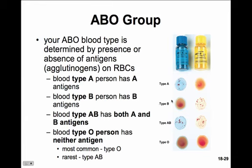If a person has blood type B and we put their blood in a pool of anti-A serum, because their blood has no A labels it will remain normal. But blood type B does express the B label, so when dropped in a pool of anti-B serum it will agglutinate. Blood type AB has both labels, so it will agglutinate in both anti-A and anti-B serum. Type O has neither label, so it will remain normal in both anti-A and anti-B serum.